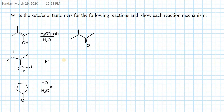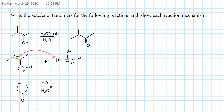We have hydronium as the acid catalyst condition. In the first step, the enol alkene acts as a nucleophile and hydronium acts as an electrophile, and we are going to have a protonation step — protonation of the alkene.